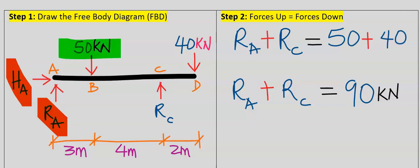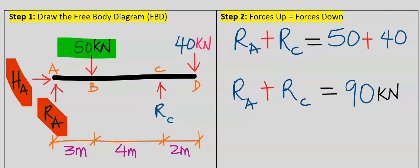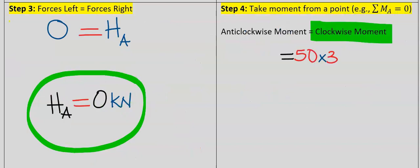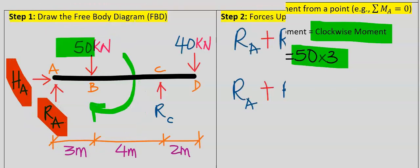We are now left with the 50 kilonewton, 40 kilonewton, and the reaction at point C. Considering the 50 kilonewton load, if it acts on the beam alone it will turn the beam in the clockwise direction. The moment is 50 multiplied by 3, since 3 is the distance from that point to where we are taking the moment. We now have the clockwise moment: 50 × 3.